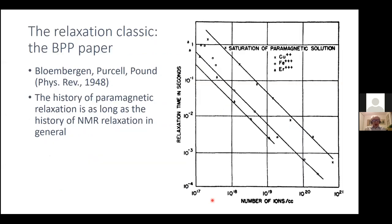Let me start at the very beginning of the theory of NMR relaxation — the famous Bloembergen, Purcell, and Pound paper from 1948. This is the first paper presenting a theory of relaxation in NMR in general, and already in this very classic paper, paramagnetic relaxation is mentioned as an interesting case.